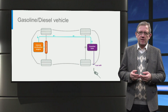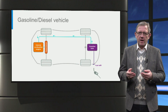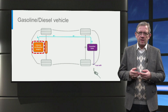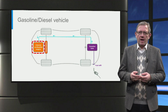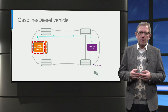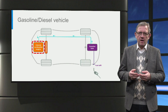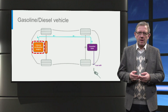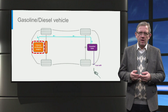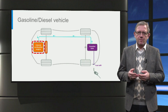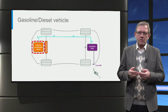For reference, let us start with the gasoline and diesel vehicles that use an internal combustion engine for propulsion. A gasoline car typically uses a spark-ignited engine rather than a compression-ignited system used in diesel vehicles. The engine uses a complex mechanical transmission system to transfer power to the wheels.